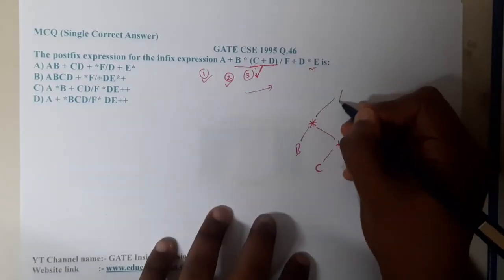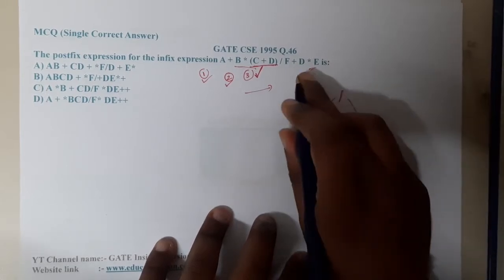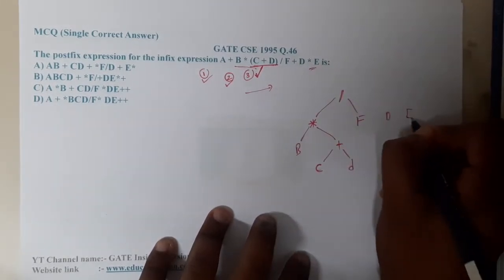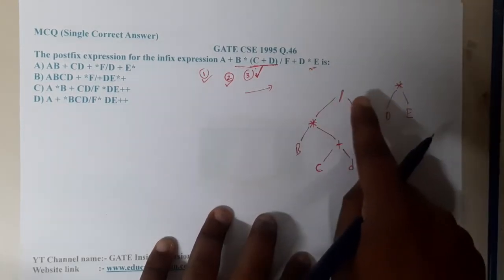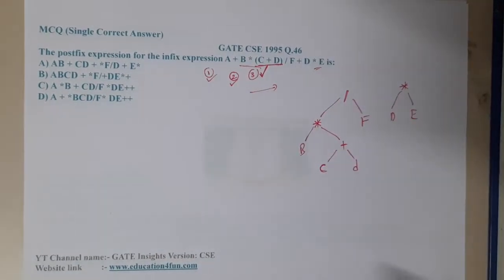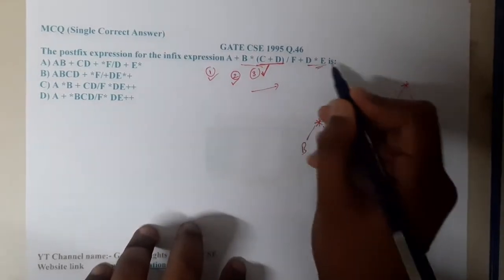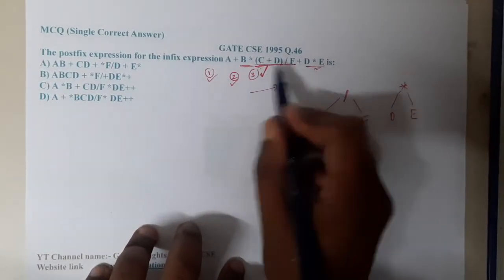You will be combining this with B and the operation with them is a star. After that, you will divide this with F. And at the end, you got D and E on the other hand with star operation. I'm just drawing this in terms of graphs - sorry, trees, small small trees.